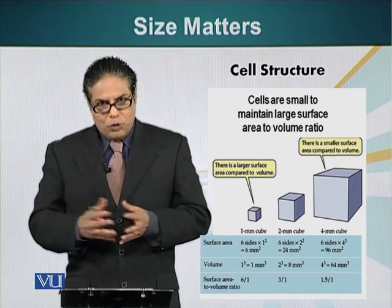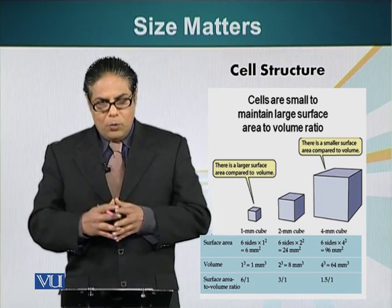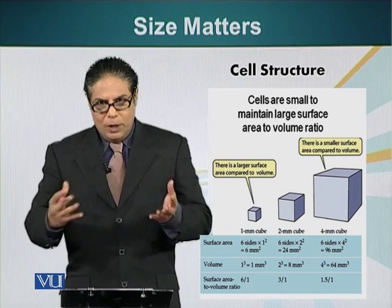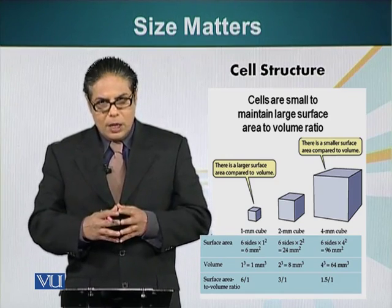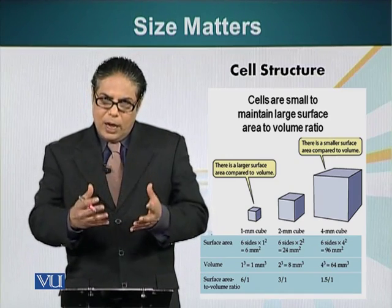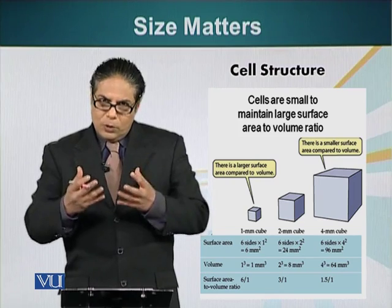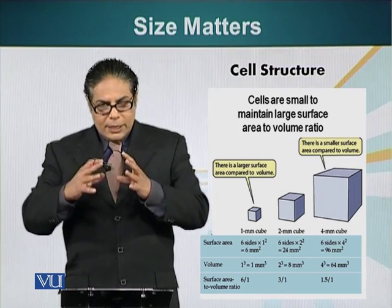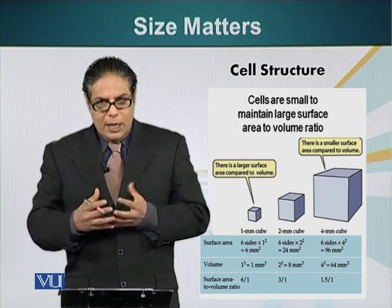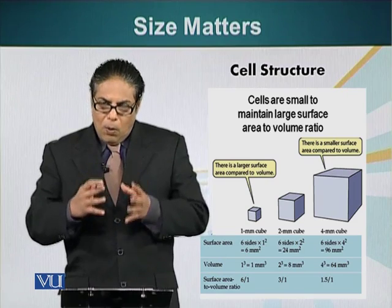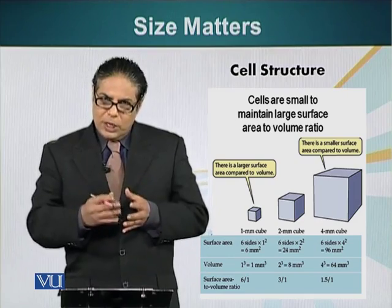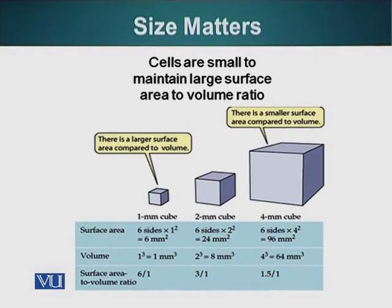For example, cells need glucose as a source of energy. They burn glucose in an oxidation reaction, just like fuel burns in our houses or in our cars, producing carbon dioxide. Carbon dioxide has to be exported out, whereas glucose and oxygen have to be brought in. So as the size of the cell increases, its requirement for raw materials also increases, as does the demand to export waste material outside the cell.